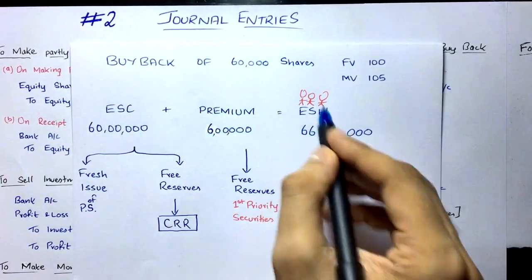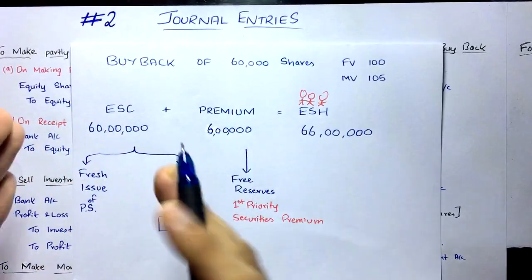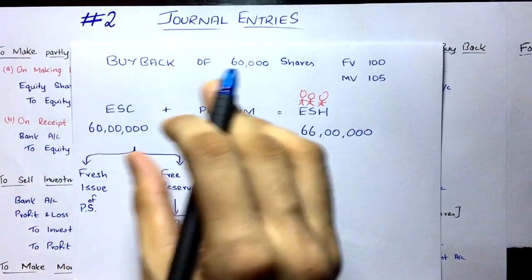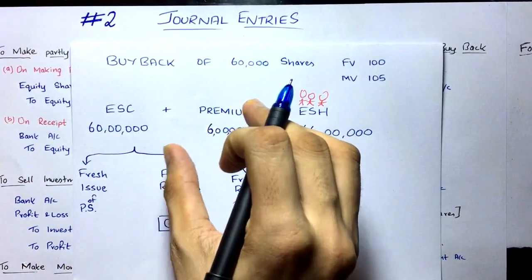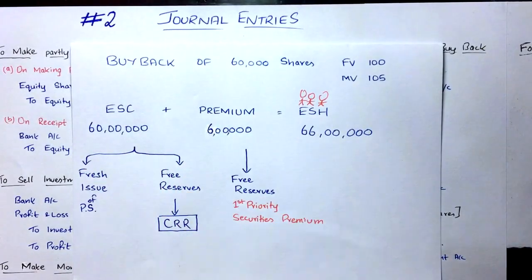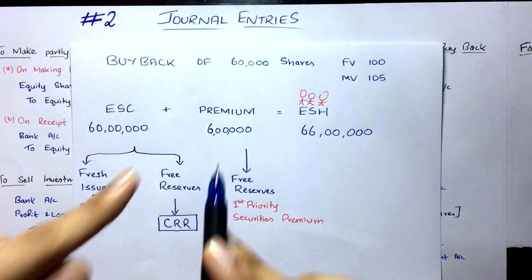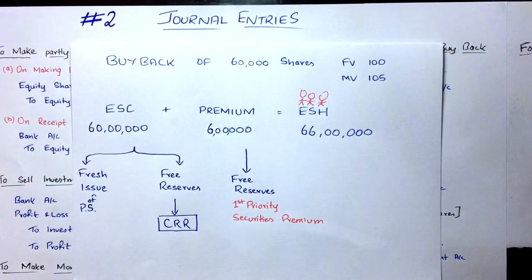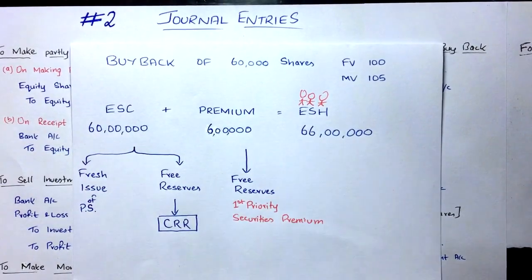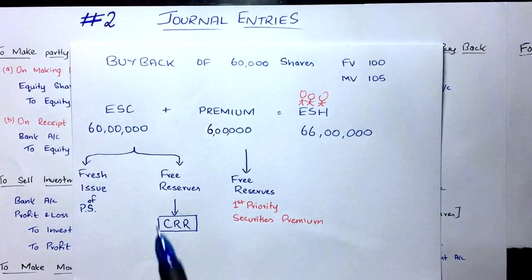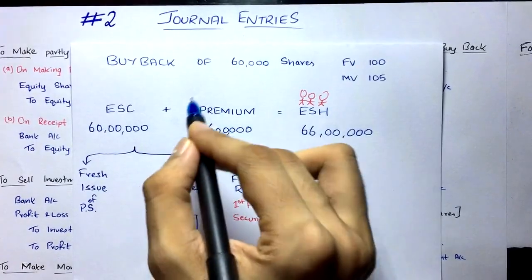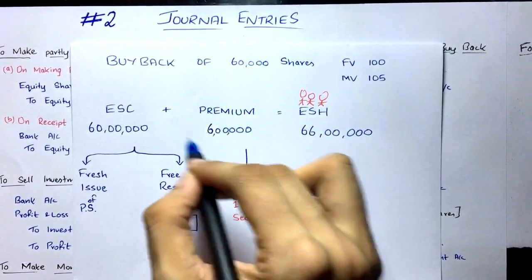To buy back those shares, the company needs to pay equity shareholders the face value — that's equity share capital — plus a premium, which is the amount above the face value. That extra amount is a loss to the company because they are paying more than what it's worth. This premium loss has to be written off by the company.